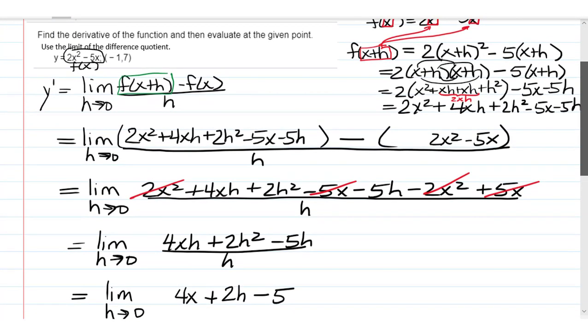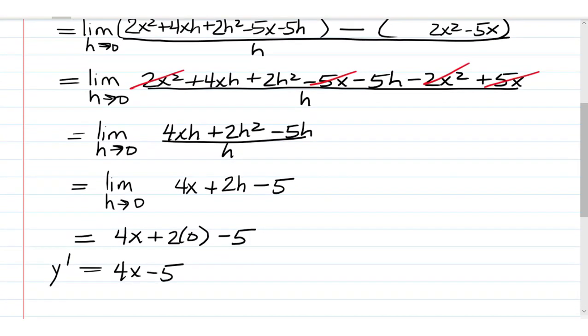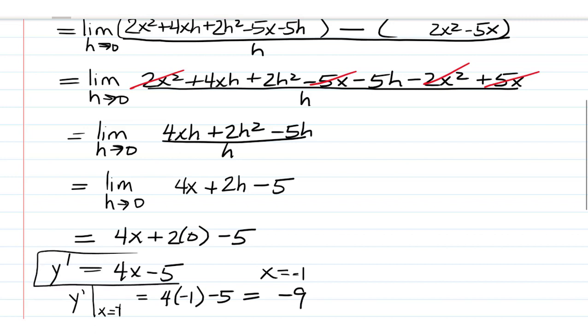So, in the original problem we were asked to evaluate that at the point negative 1, 7. What that means is that we're going to plug in x equals negative 1 and see what we get. So, y prime evaluated at x equals negative 1 is equal to 4 times negative 1 minus 5, which is going to give us negative 9. So, the two parts of the problem: here's y prime and here's y prime evaluated at negative 1.